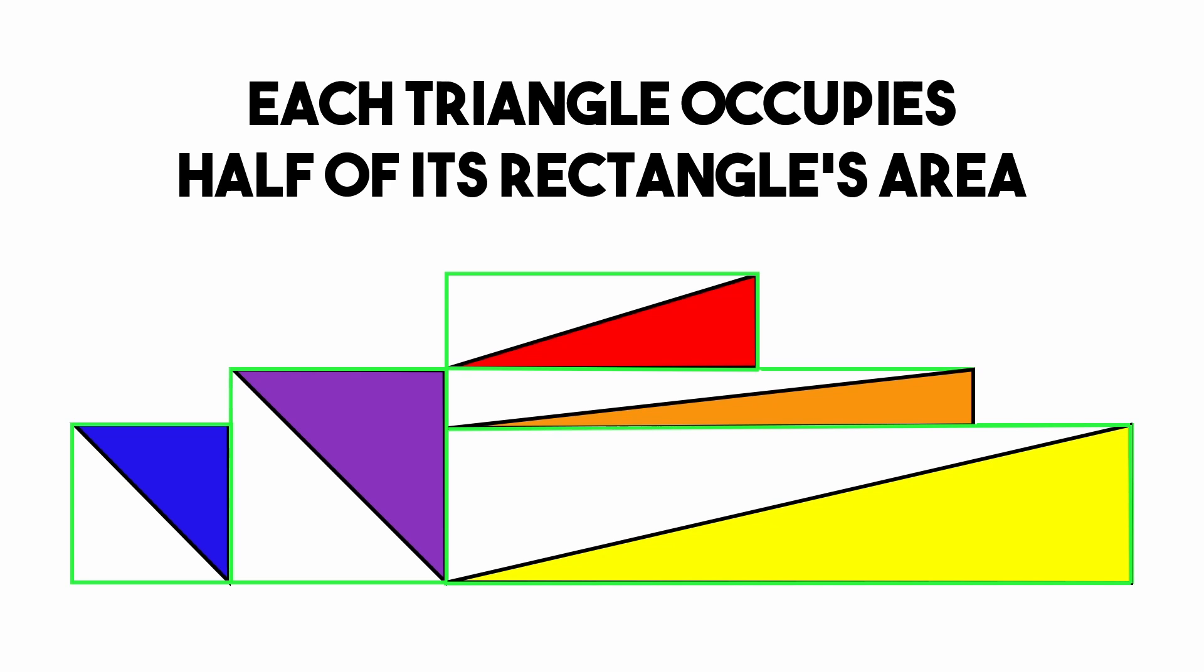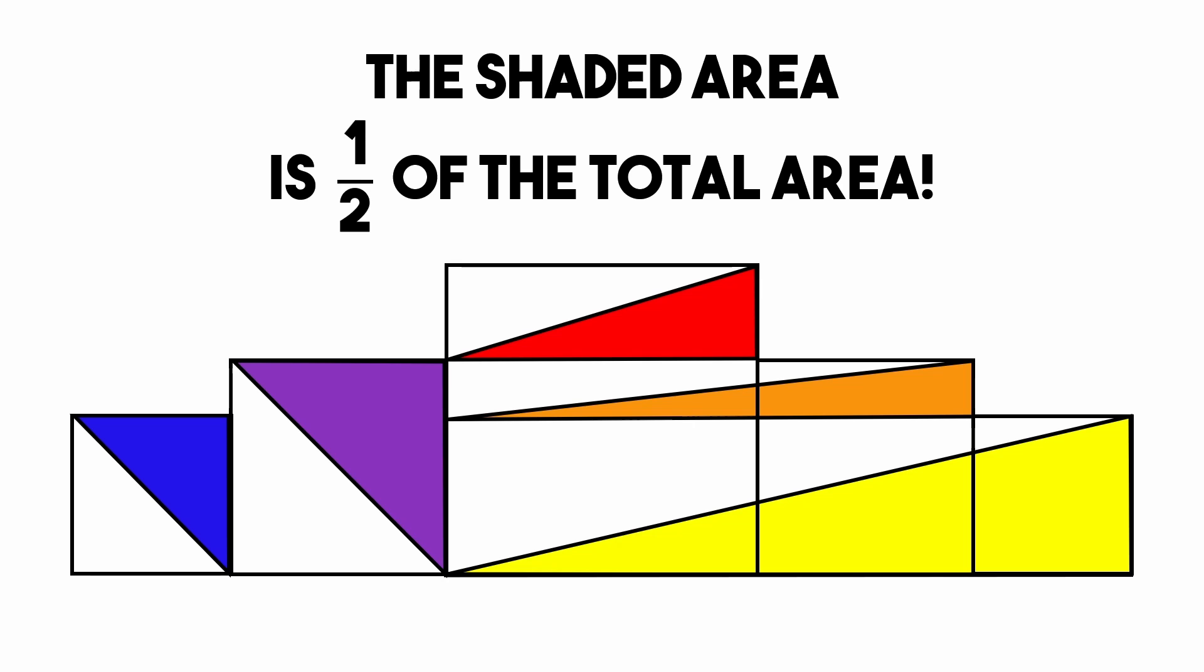Which means, when we combine them all to form our original diagram, the shaded regions take up one half of the total area.